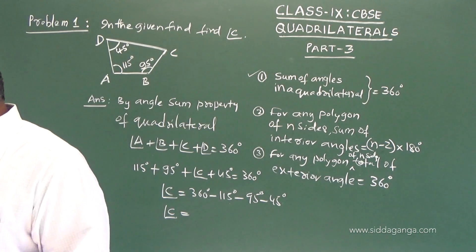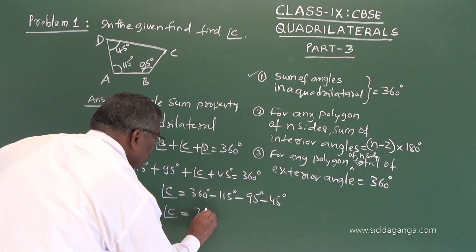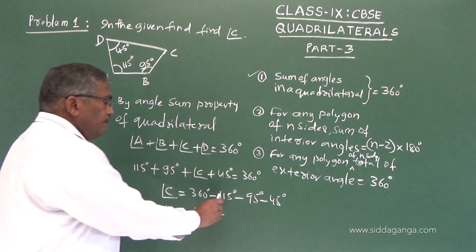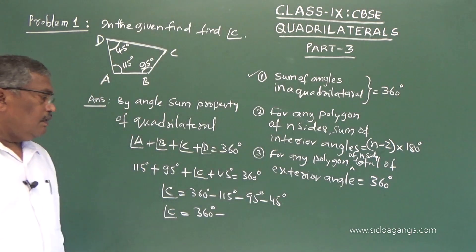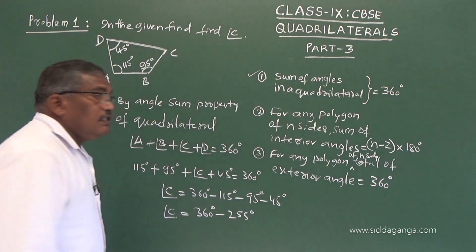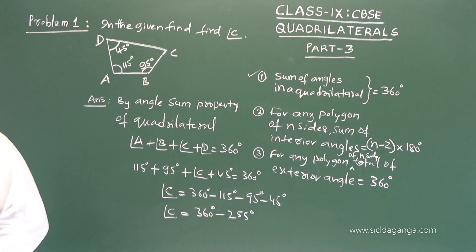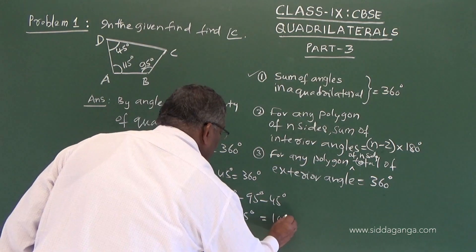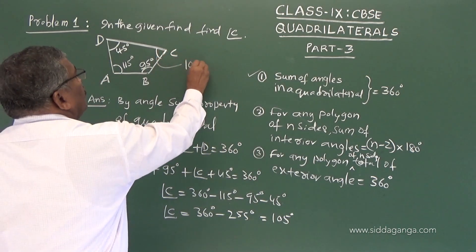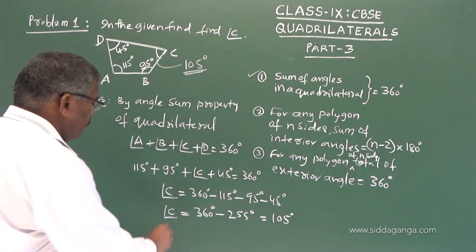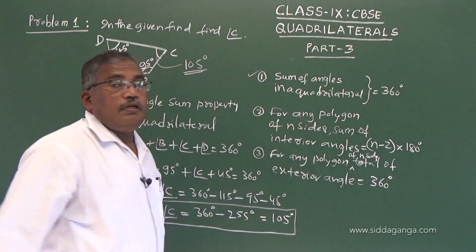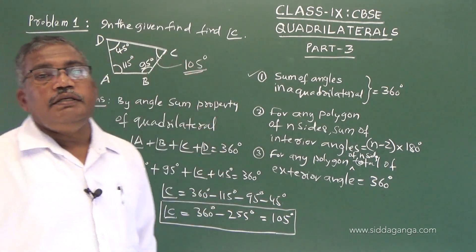Adding 115, 95, and 45 gives 255. So C equals 360 minus 255, which is 105 degrees. Angle C is 105 degrees. The sum of four angles is 360 degrees; three angles are given, so you can find the fourth one.